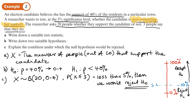As the significance level changes — if it's higher or lower — it's going to change when we accept or reject H0. You should now be able to do Exercise 7A on pages 100 to 101 of the textbook.